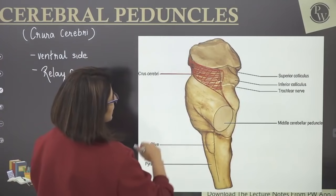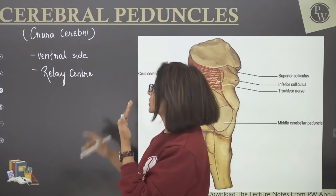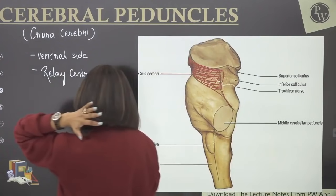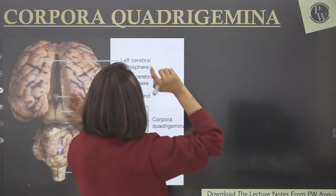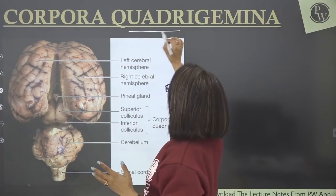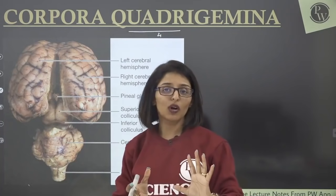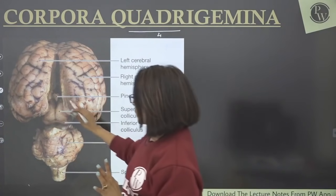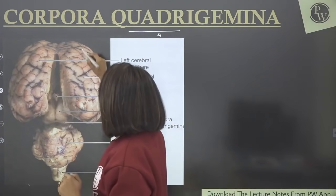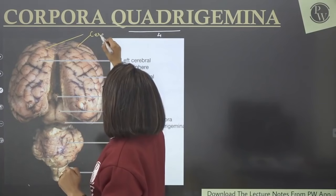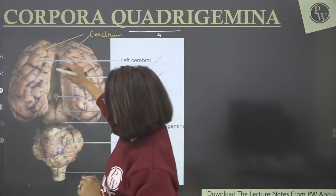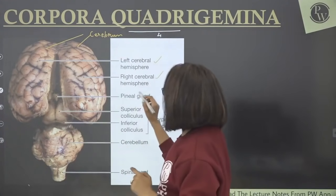Corpora quadrigemina: corpus means body, quadri means four — these are four oval bodies on the dorsal side of the midbrain. From a dorsal view, this diagram shows the left and right cerebral hemispheres, and the corpora quadrigemina are visible at the back of the midbrain region.